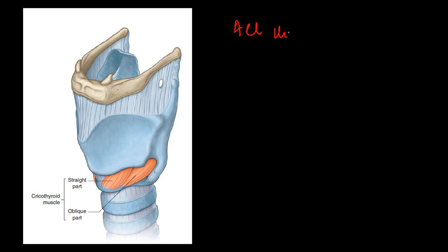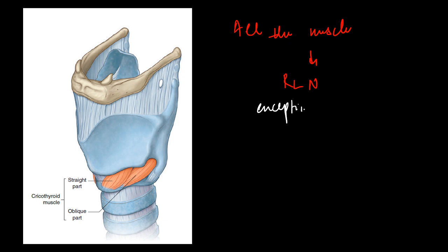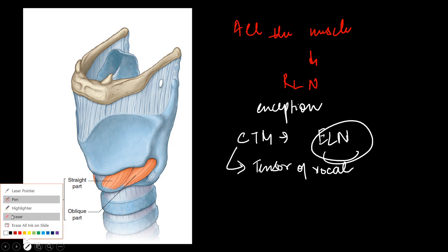Talking about the nerve supply of the muscles: all the muscles of the larynx are supplied by the recurrent laryngeal nerve. The exception is the cricothyroid muscle, which is supplied by the external laryngeal nerve. Remember that the cricothyroid muscle is the tensor of the vocal cord.